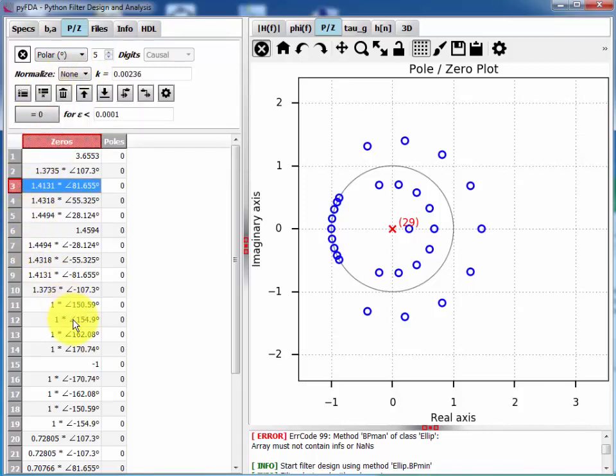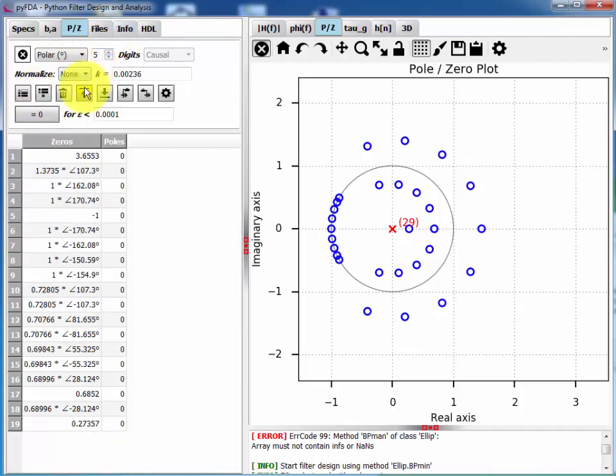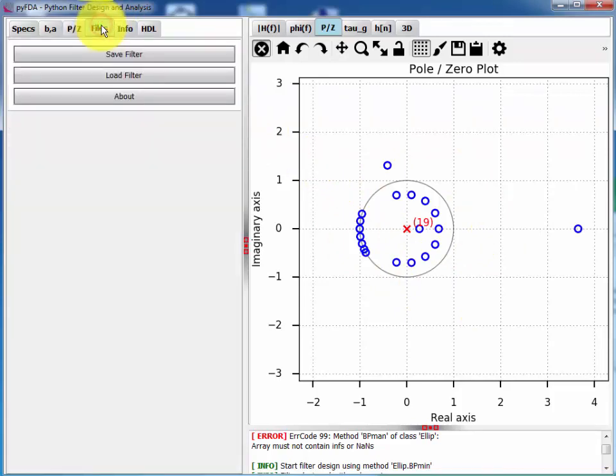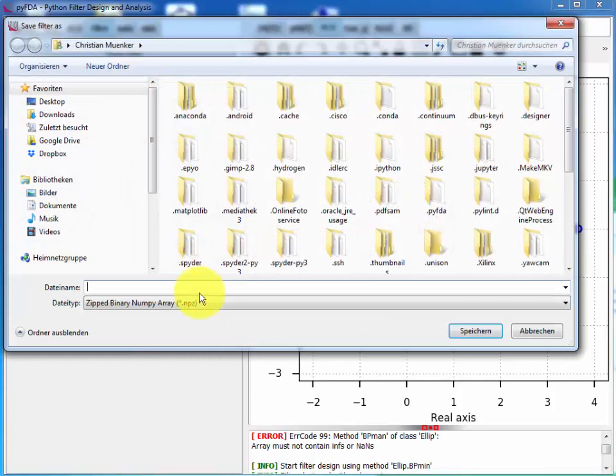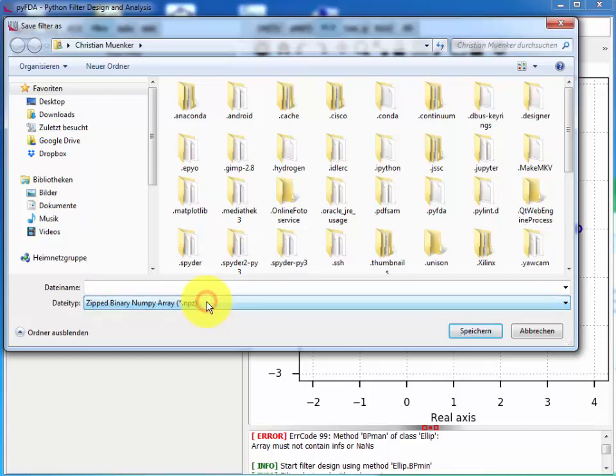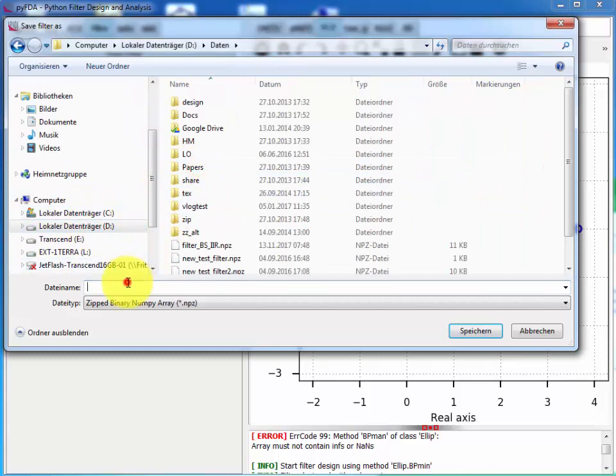You can delete one or more poles and zeros like I do here. And then you need to save this until the effects become visible here. You can save your filter in various formats. The format that works best is the zipped binary numpy array. So I'll call this myfilter.